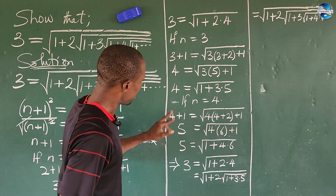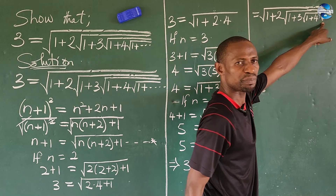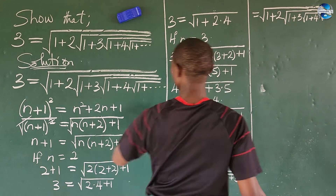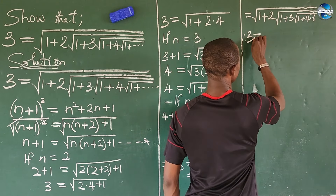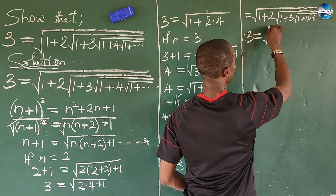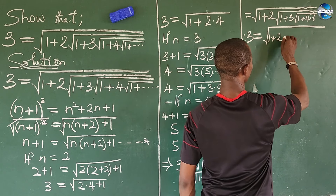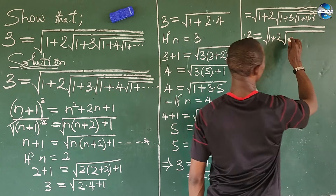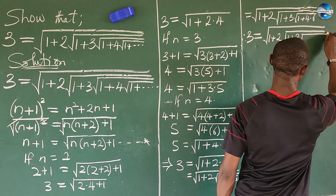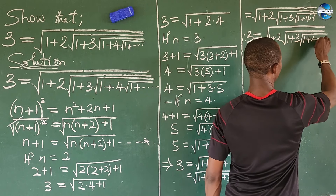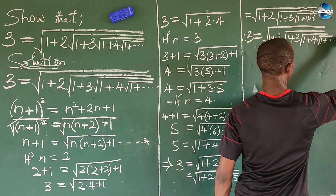If we solve for n equal to 5, we're going to have a value for 6 again. Therefore, we can come to the conclusion that our 3 equals the square root of 1 plus 2 into the square root of 1 plus 3 into the square root of 1 plus 4 into the square root of 1 plus da-da-da, continuing to infinity.